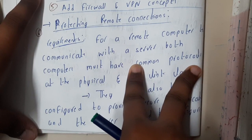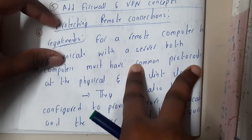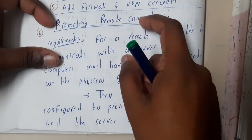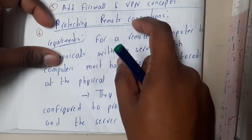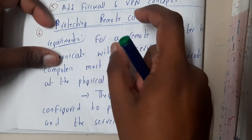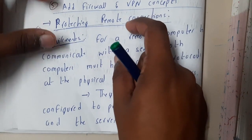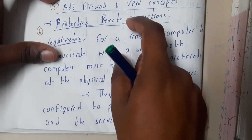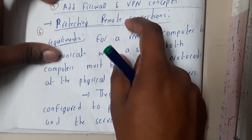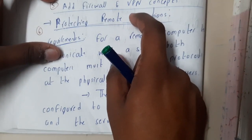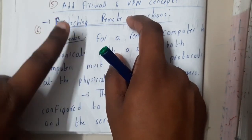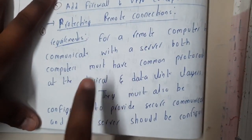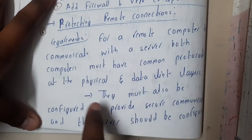Assume the server is accepting TCP protocol and the client is sending HTTP protocol — how can they understand each other? This guy is saying 'I am HTTP' and that guy is saying 'I am TCP,' so there will be confusion. That is the reason why both should always use the same protocol, whether TCP, UDP, or any one protocol for both sides.